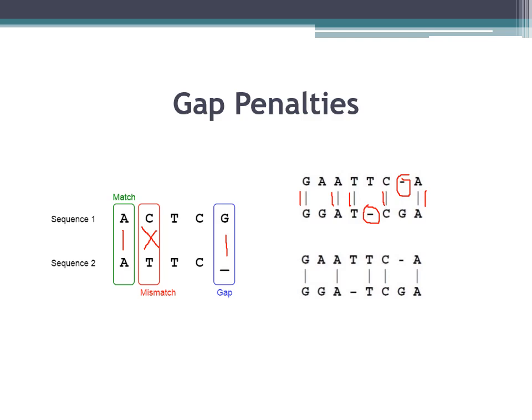The total alignment score in this case is 5. If you give one score for each matching residue, then the total matching nucleotides among these two sequences are 5, so the total alignment score would be 5.